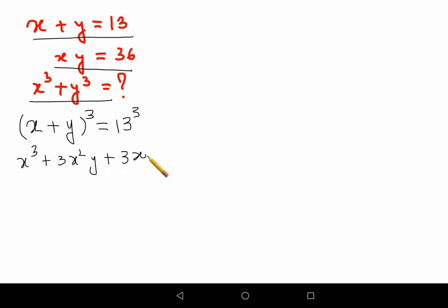plus 3xy square equals 13 cube. I'm going to write 13 cube as it is. Now we'll write x cube and y cube together because we have to find that value, right? And between these two I can take 3xy common, so I'm left with x plus y.